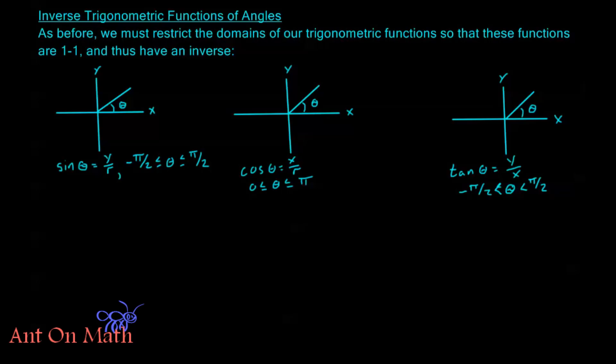As before, in order to talk about an inverse trig function we need to restrict the domains of our trig functions so that these functions are one-to-one and thus have an inverse. So here I've written the domains, but let's go ahead and draw this in. Our restricted sine here in terms of angles is going to look like this. We're only looking at angles between negative pi over 2 and pi over 2. This is where our restricted sine is going to be and this is where the inverse of sine is going to exist.